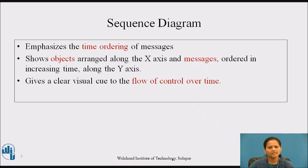Interaction diagrams may stand alone to visualize, specify, construct and document the dynamic part of a particular society of objects or they may be used to model one particular flow of control of a use case. An interaction diagram is just a special kind of diagram that shares the same common properties as do all other diagrams, that is a name and graphical contents that are a projection into a model.